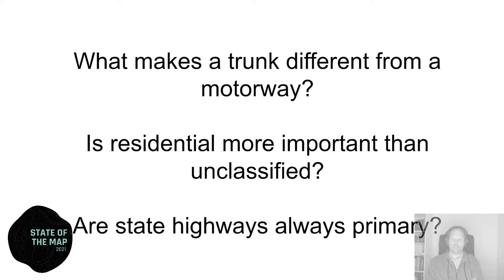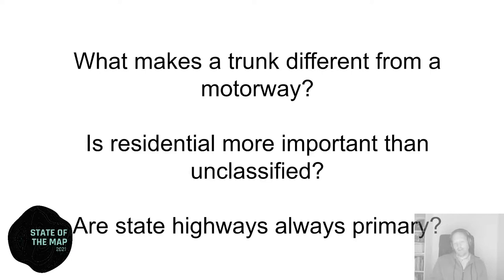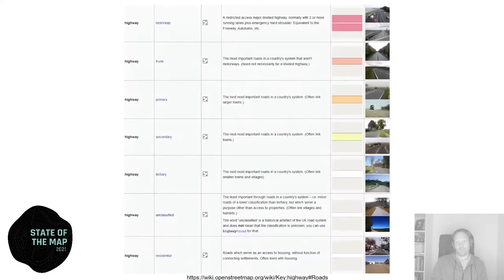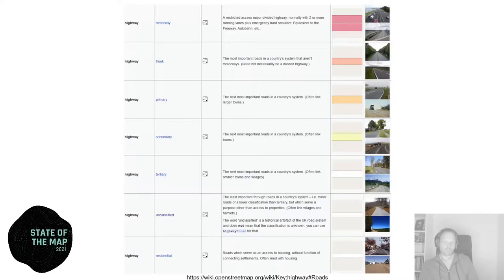Questions like: what makes a trunk different from a motorway? Is residential more important than unclassified? Are state highways always primary? These are questions that are sometimes hard to answer, but they point to confusion about how to classify roads and distinguish them from one another. To my mind, that's a clear indication that we have too many types and could do with fewer. If you look at the wiki, there are actually seven main road types for cars: motorway, trunk, primary, secondary, tertiary, unclassified, and residential. That's more types than most other maps have.